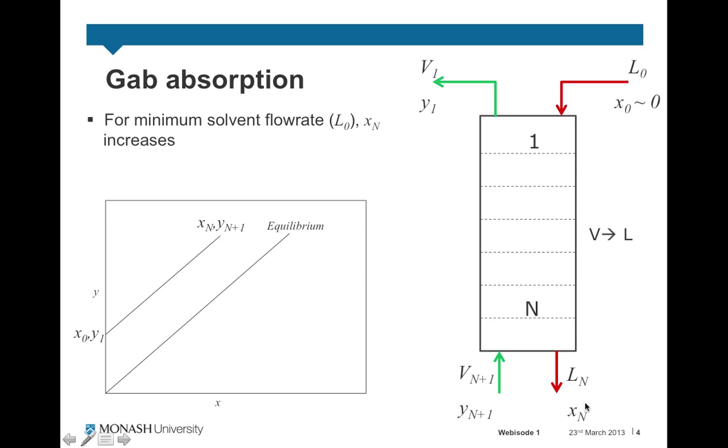And we said that X_n is the concentration that increases, so this is X_n here, and that increases, this point moves across here until it contacts our equilibrium line. So that's our new operating line for gas absorption where we have a minimum solvent flow rate.